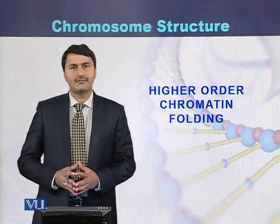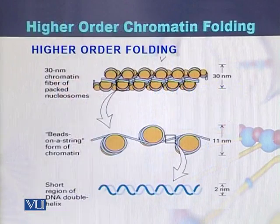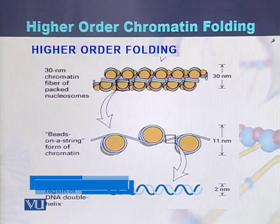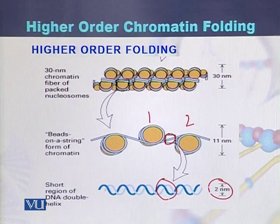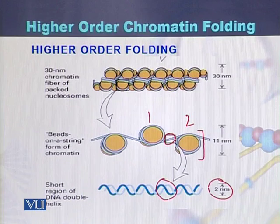Higher order chromatin folding. In this diagram, DNA is approximately 2 nanometers in diameter, present between two nucleosomes. After the formation of the nucleosome, when DNA is wrapped around the eight molecules of histones, the diameter of the nucleosome becomes approximately 10 or 11 nanometers.